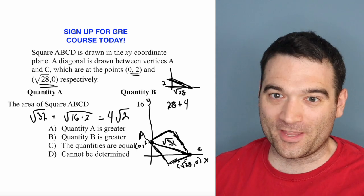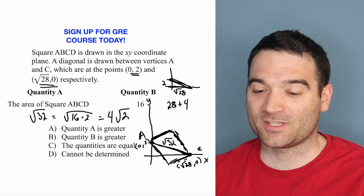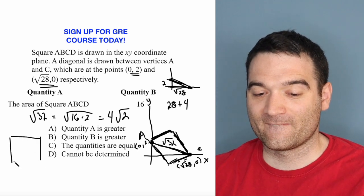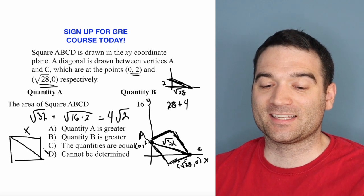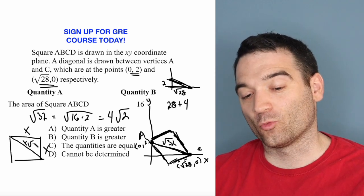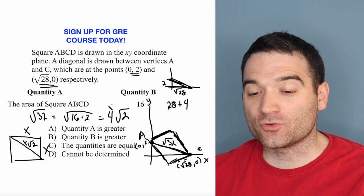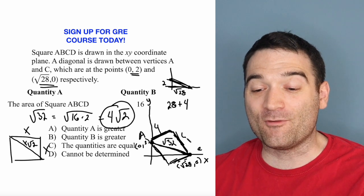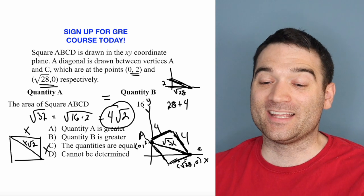4√2. Now, there is a rule that you really should know about right triangles, or I should say isosceles right triangles. If I have a square, and I have a diagonal like this, if this side is x and this side is x, then the diagonal is x√2. Well, that's what I have here. If the diagonal is 4√2, then that means that each side is going to be 4 and 4, and that the area, when I multiply 4 and 4 together, is 16.